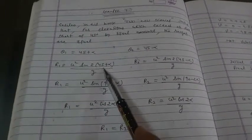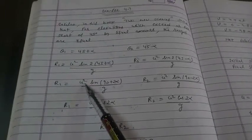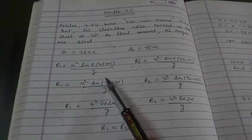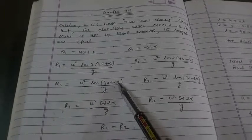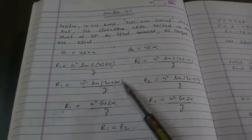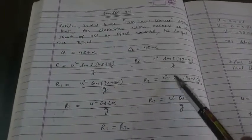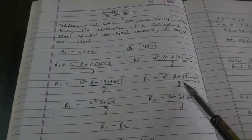We have to multiply by 2. R1 will be u square sin 90 plus 2 alpha upon g, and R2 will be u square sin 90 minus 2 alpha upon g.